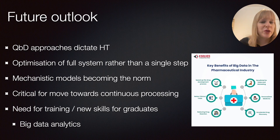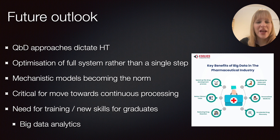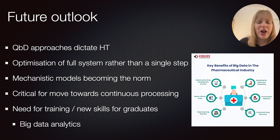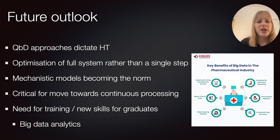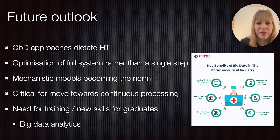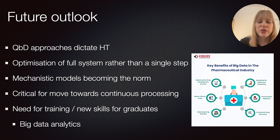What is the future outlook for high-throughput screening in the pharmaceutical industry? Quality by design approaches, stipulated by the FDA, are becoming more important — you need inbuilt quality control and awareness of your processes. High-throughput screening feeds directly into quality by design, and mechanistic models are quickly becoming the norm because you need to understand what's actually happening in the model.